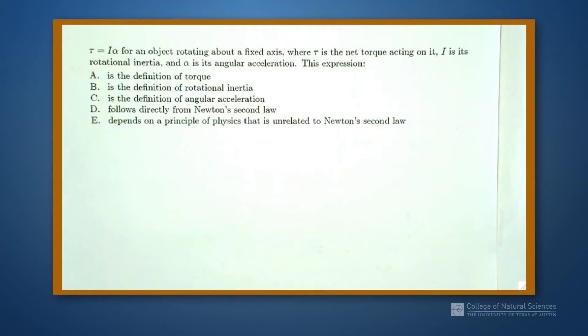This problem says that we have tau equals I alpha for an object rotating about a fixed axis, where tau is the net torque acting on it, I is the rotational inertia, and alpha is the angular acceleration. This expression does what?